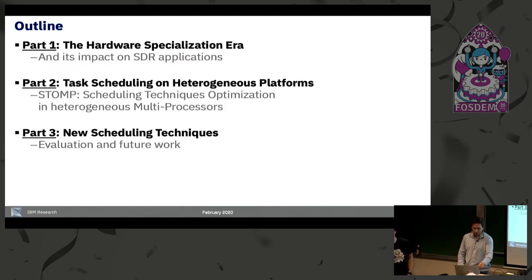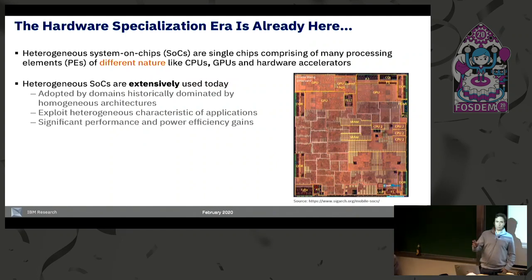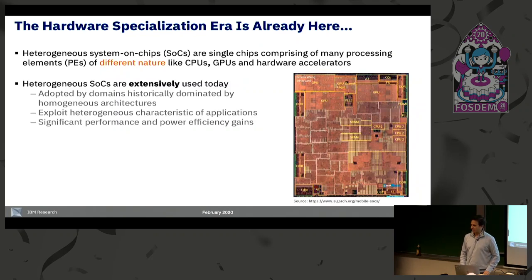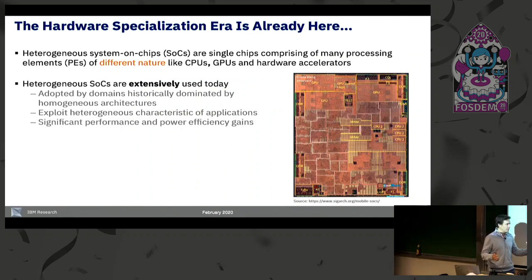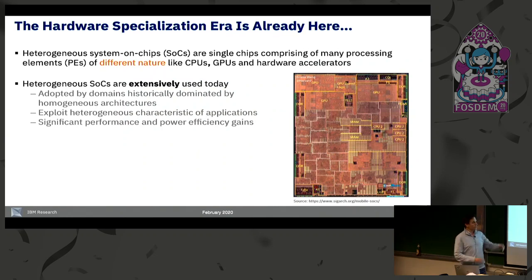In the interest of time, I will move forward. At this time of the day, I think I have already seen maybe four or five talks trying to motivate this idea of hardware specialization — heterogeneous chips. The hardware specialization era is already here. This is an interesting die photo of a cell phone chip processor where, in addition to the traditional general-purpose CPU, you also have GPUs and plenty of acceleration engines for different functions.